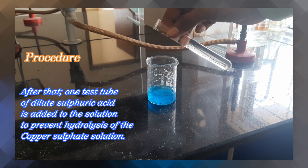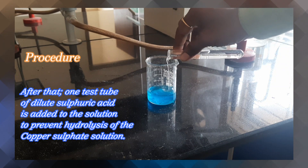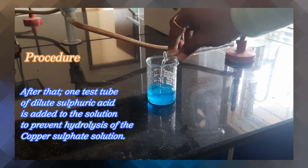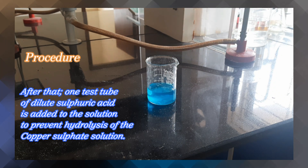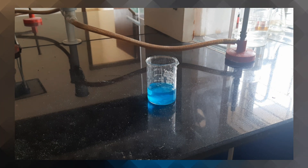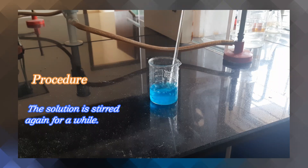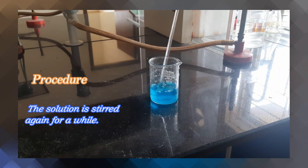After that, one test tube of Dilute Sulphuric Acid is added to the solution to prevent hydrolysis of the copper sulphate solution. The solution is stirred again for a while.